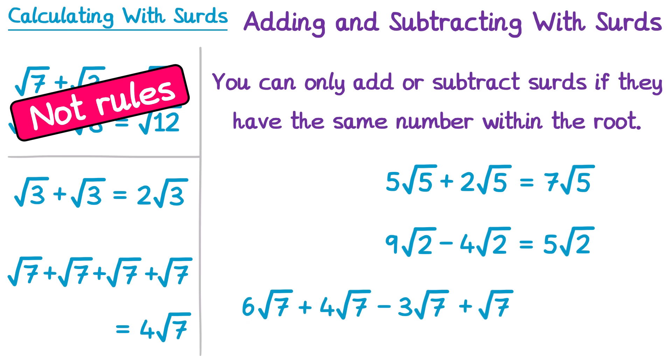You can even do larger expressions like 6 root 7 plus 4 root 7 subtract 3 root 7 plus 1 root 7. We do 6 plus 4 to get 10, subtract 3 to get 7, then add 1 more to get 8. So the answer is 8 root 7.